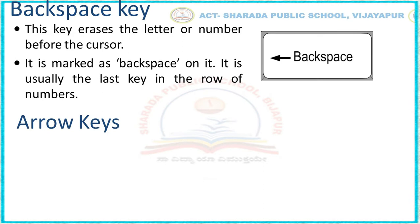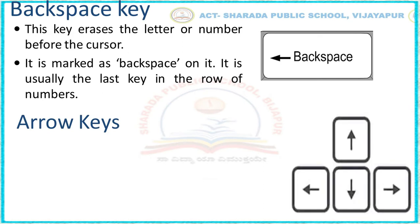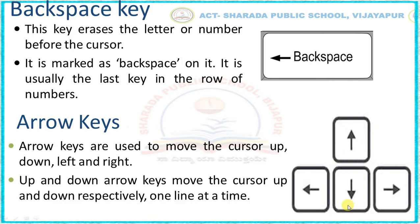Let us move to ARROW KEYS. Here you can see the four ARROW KEYS: LEFT, RIGHT, UP, DOWN. ARROW KEYS are used to move the cursor UP, DOWN, LEFT, and RIGHT. UP and DOWN ARROW KEYS move the cursor up and down respectively one line at a time. LEFT and RIGHT ARROW KEYS move the cursor left and right respectively one letter at a time.